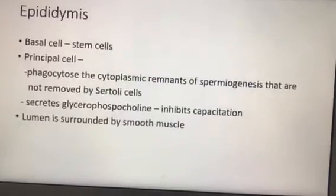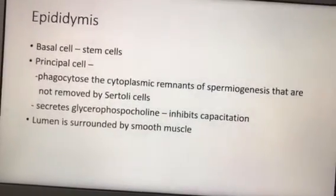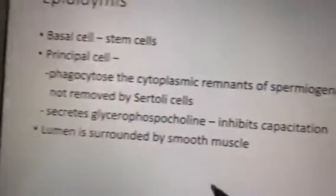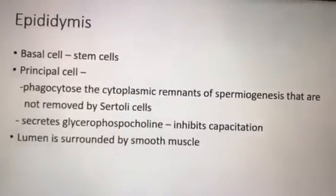The principal cell also performs phagocytosis of cytoplasmic remnants of spermiogenesis that are not removed by Sertoli cells. During spermiogenesis, the spermatid - which is an irregular cell without a proper head, body, and tail - is transformed into a mature sperm with a head, body, and tail piece. During this transition, excess cytoplasm is engulfed by Sertoli cells, and whatever Sertoli cells don't engulf is phagocytosed by the principal cells. The lumen is surrounded by smooth muscle. That's all about the epididymis.